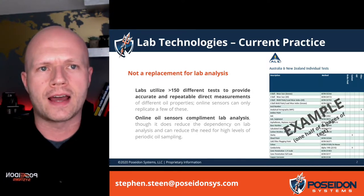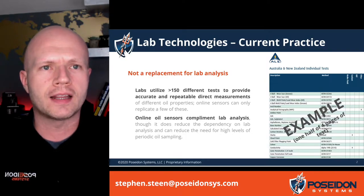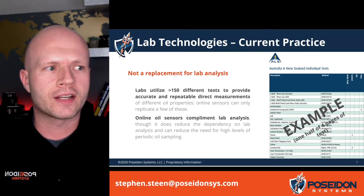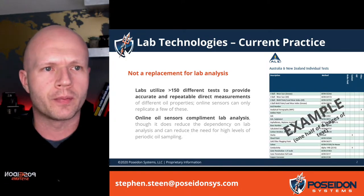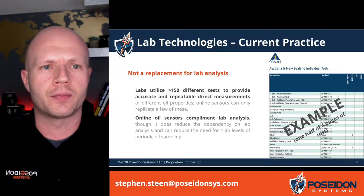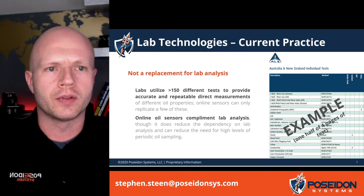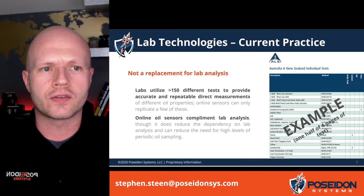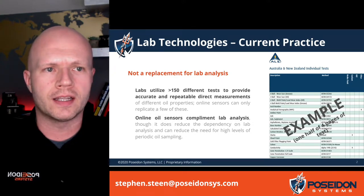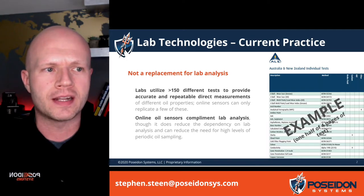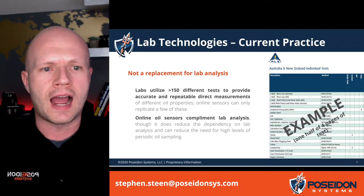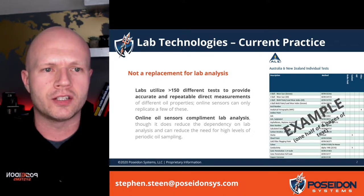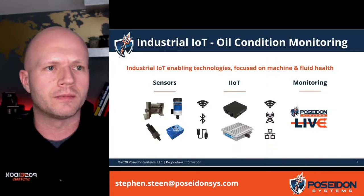A little bit of background — everyone is familiar with lab sampling as a practice for oil condition monitoring, and we want to highlight that online sensors are not a direct replacement for that lab analysis. On the right hand side you can see a short excerpt from one of the partners we work with — it's just a half page of roughly four pages of tests, and they utilize more than 150 different tests to provide those measurements. Those are very accurate, direct, repeatable measurements for different oil properties, whereas online sensors can only replicate a couple of those online. In other cases they are trending related measurements to give an indication of whether something is wrong with the oil. But it is very good because it complements lab analysis in terms of reducing the dependency on lab analysis, as well as the need for high levels of periodic sampling. You can use the trending from online sensors as an analog for the periodic sampling that had been done in the past.